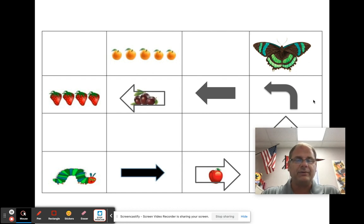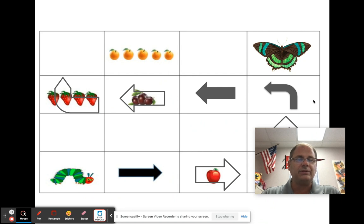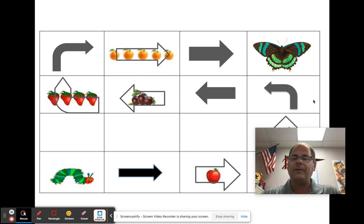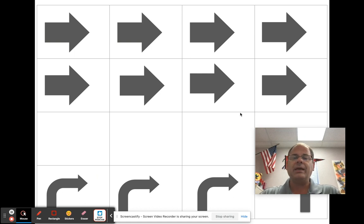And then he wants to eat the strawberries and turn and turn some more and eat the oranges. And then he wants to go straight and become a butterfly. And we're going to use these arrows to show the way.